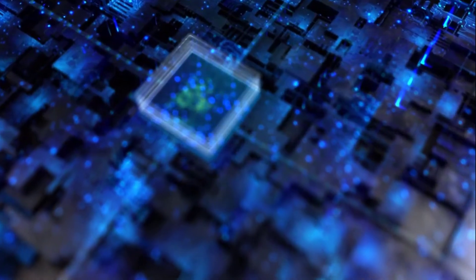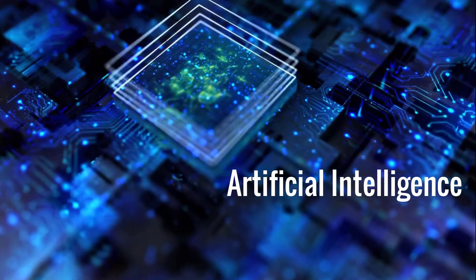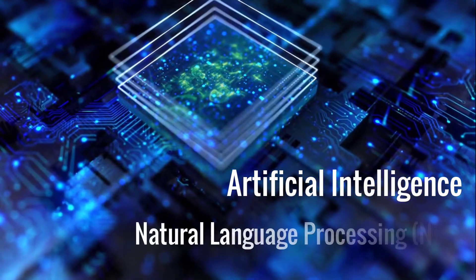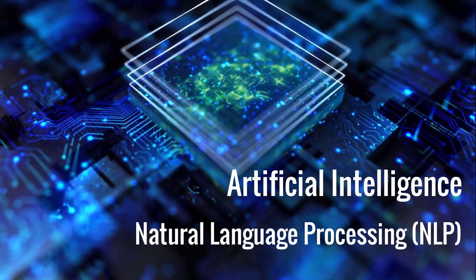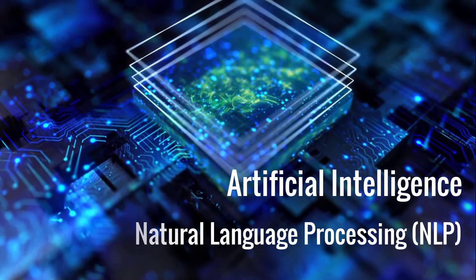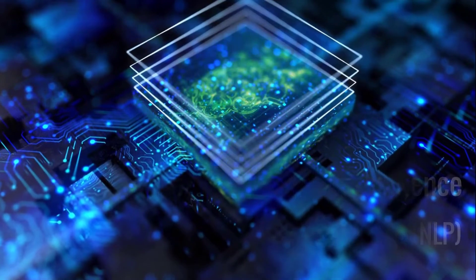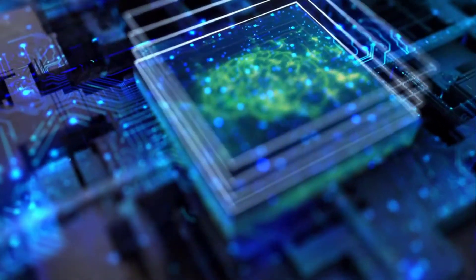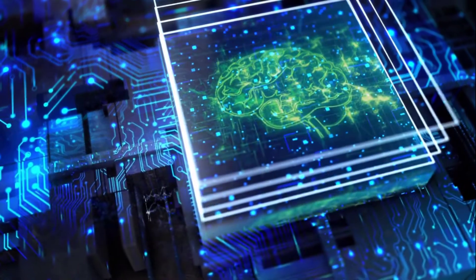This semantic technology can be combined with artificial intelligence — more precisely, with natural language processing, or NLP — to make computers able to understand humans. Semantic technology uses artificial intelligence and machine learning to analyze text and associate meaning to words.